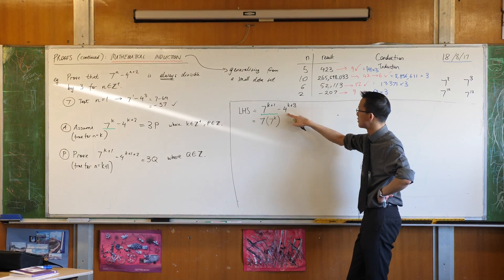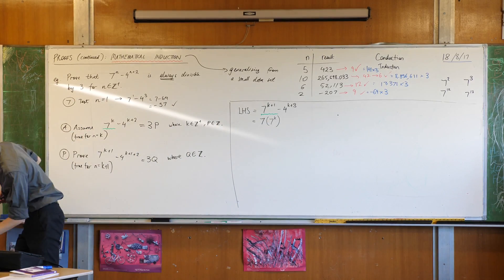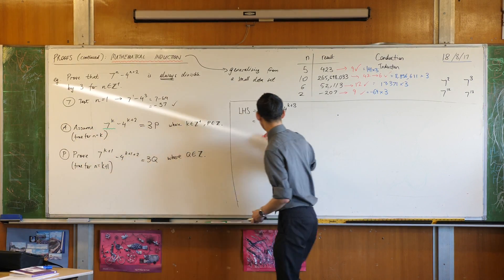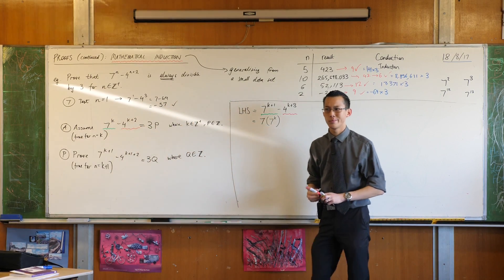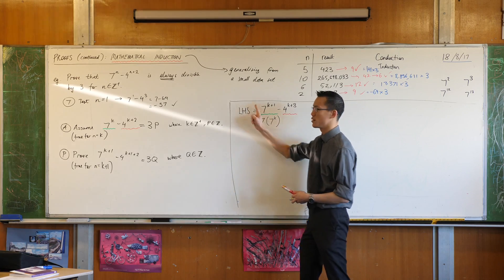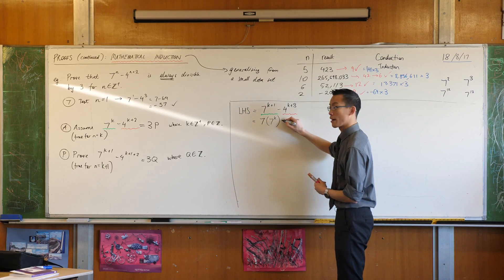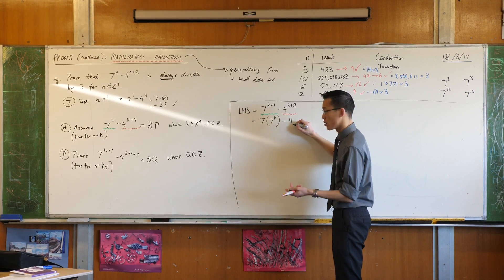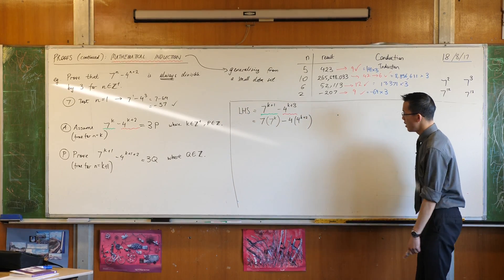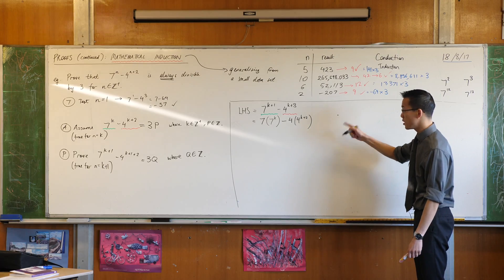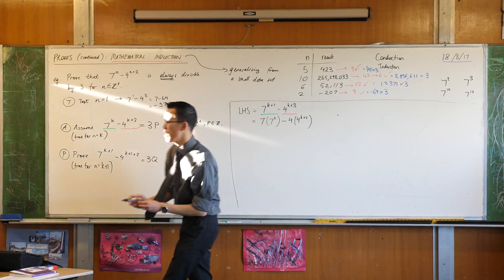Now what about this other term? This is related to that one over there as well. What is the difference between this and this term? It's 4 times bigger. Just like the first term was 7 times bigger, this one has an extra multiple of 4. So therefore I can write this as take away 4 lots of 4 to the k plus 2. This is progress because it looks closer to what I need, but it's not quite there yet.